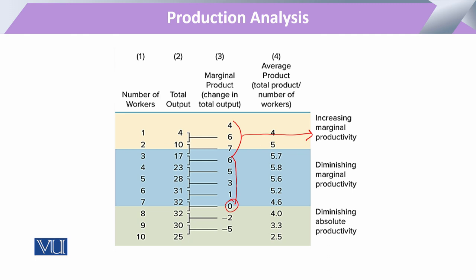If at this aspect we are not going to stop our production, it will further increase into diminishing absolute productivity — that is the range where we will see that total production itself will decline. So this marginal physical productivity is our yardstick: with the help of the law of diminishing marginal physical productivity, an entrepreneur can decide at which stage to increase input, how much to increase, and at which stage to stop adding that input to avoid loss in production.